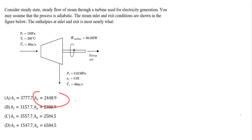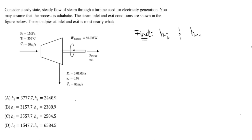We are given answer choices. Note that 'i' denotes inlet and 'e' denotes exit. What we want to find: the enthalpy at the inlet — lowercase h, h sub i — and the enthalpy at the exit, h sub e.